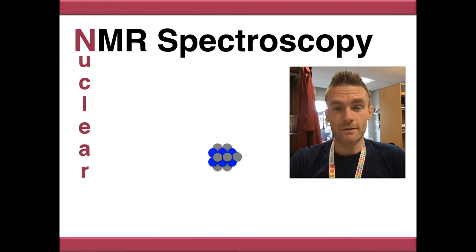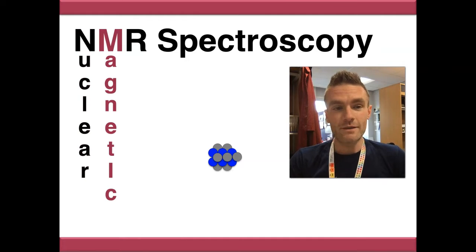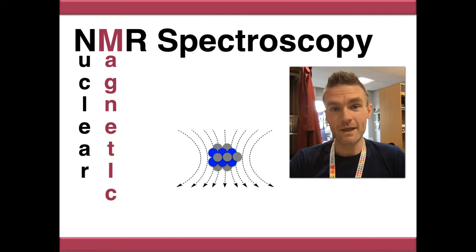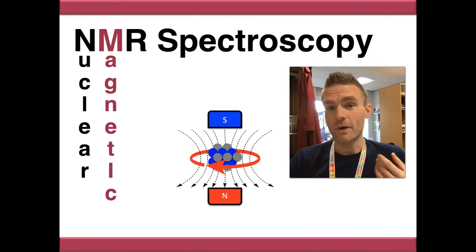So what is NMR? Well, N stands for nuclear and we're looking at the nuclei of the atoms in our molecule. The M stands for magnetic. We're going to place our molecule in a very strong magnetic field and the nuclei in our molecule are going to respond to that magnetic field by behaving a little bit like little magnets themselves.